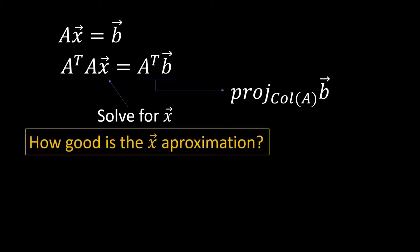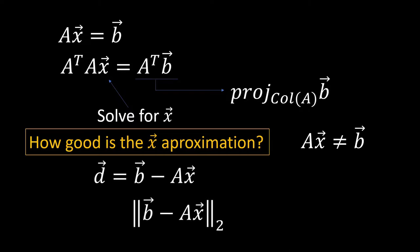But how good is our X vector approximation? Because after all, this is an approximation, so it's not going to perfectly reproduce the B vector. So AX will not equal B. Well, we do this by computing a difference vector. Then we take the 2 norm of the difference vector, and based upon how large or small this value is, we can get a really good understanding of how good our X vector approximation is.